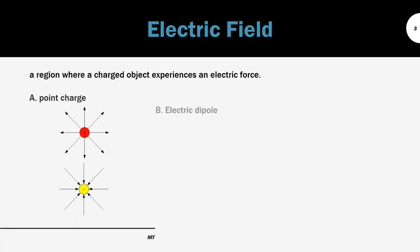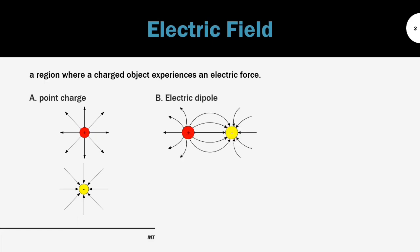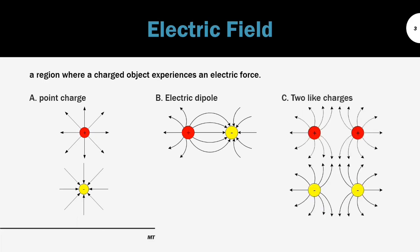Next is about the electric dipole, where we have one positive charge and one negative charge. And then another one is the like charges — we can see that the electric field around the charges is repelling each other.